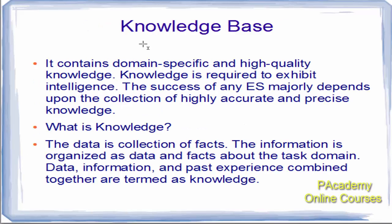There are different components of an expert system. The first component is the knowledge base, which contains domain-specific and high-quality knowledge. Knowledge is required to exhibit intelligence. The success of any expert system majorly depends upon the collection of highly accurate and precise knowledge, which is stored in the knowledge base and fed in by human experts.